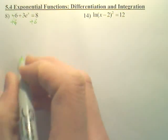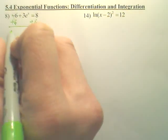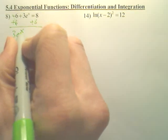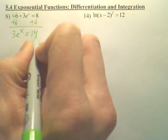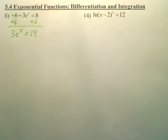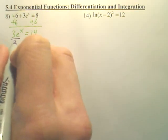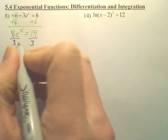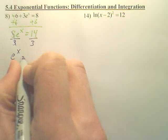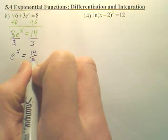First thing is add that over. 3e to the x equals 14. Then divide by what? 3. We now have e to the x equals 14 over 3.